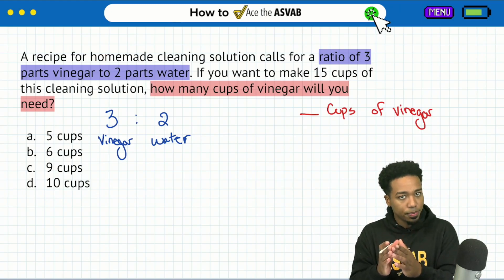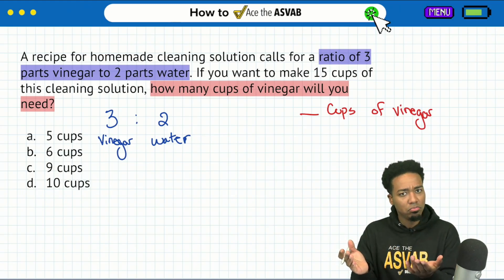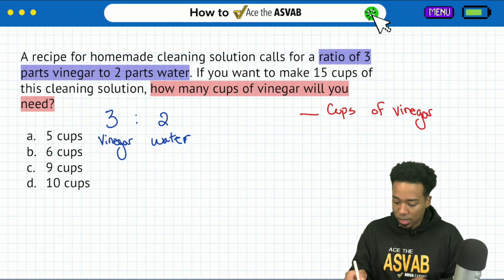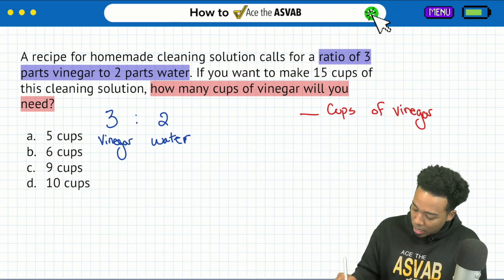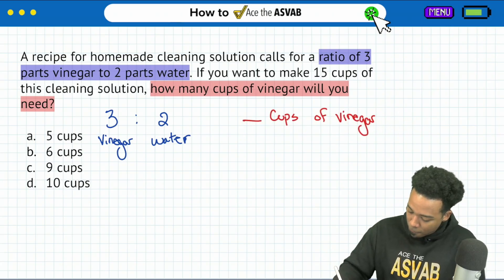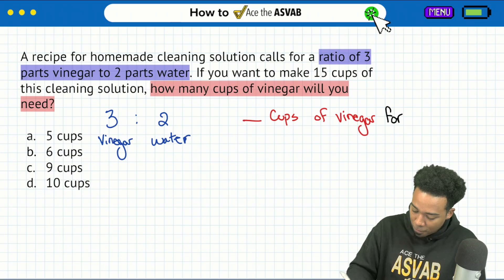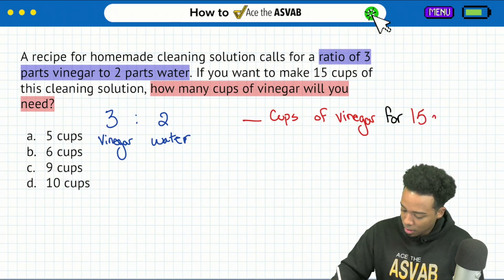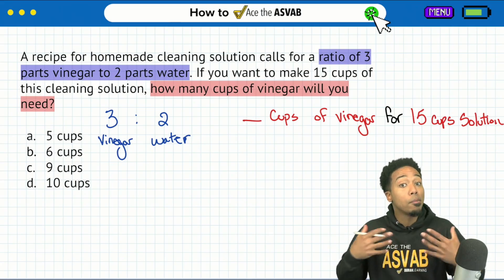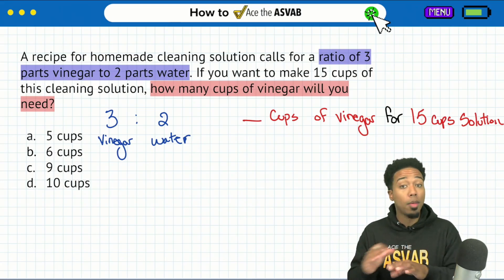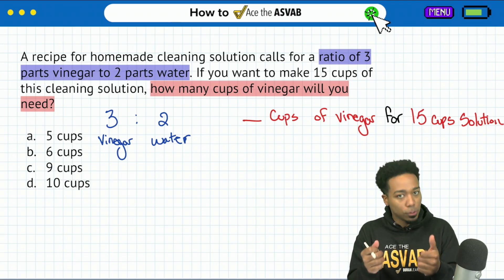So with that said, do we have enough information? Not quite yet. Here's what we need to solve this. We're told that we want to make 15 cups of this cleaning solution. We need blank cups of vinegar. Let me write this over here. We need blank cups of vinegar for 15 cups of the solution. So notice, remember earlier at the beginning of the video when I said, if you know how to compare the same things in the same way, this problem is super easy. This is where that's going to come into play.